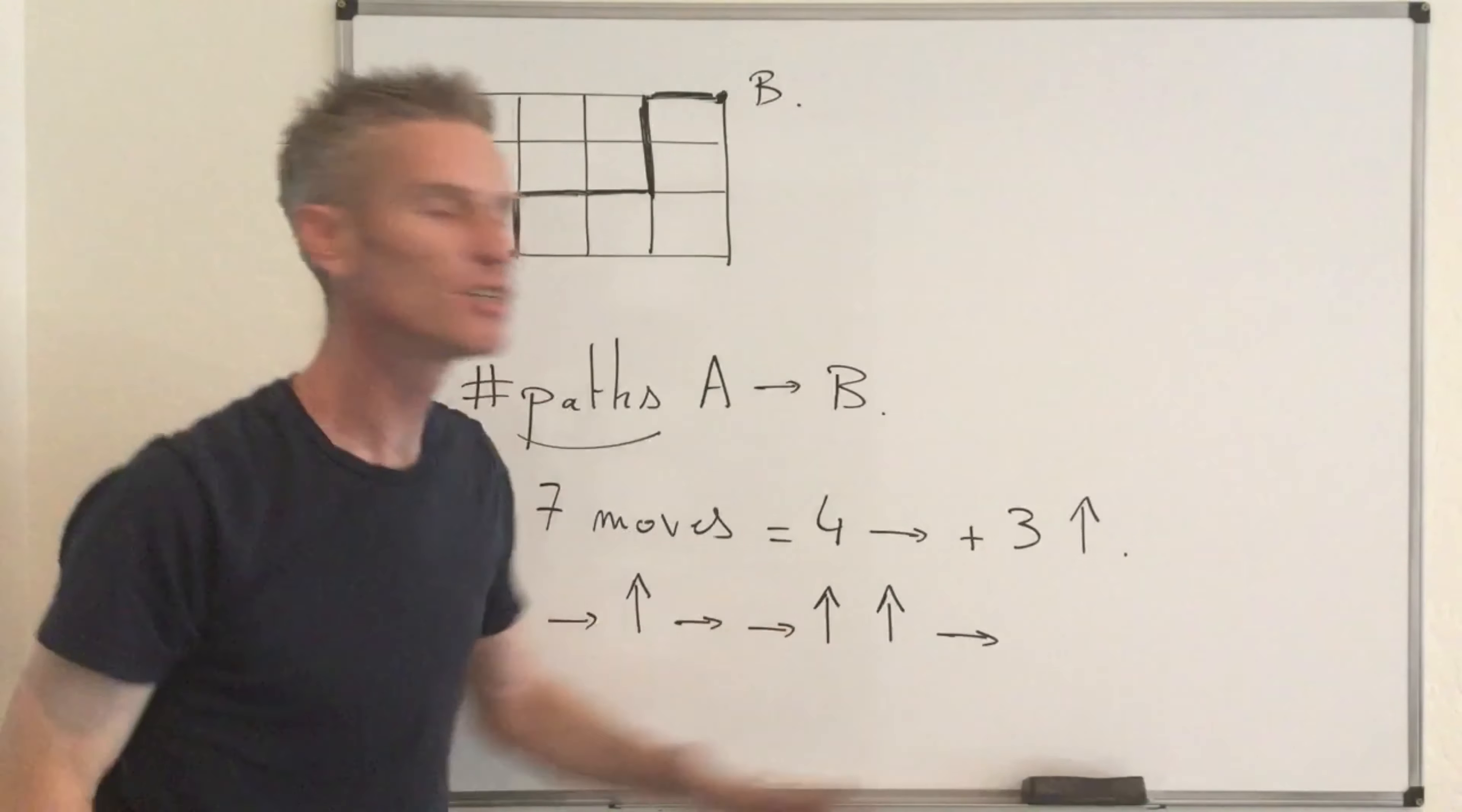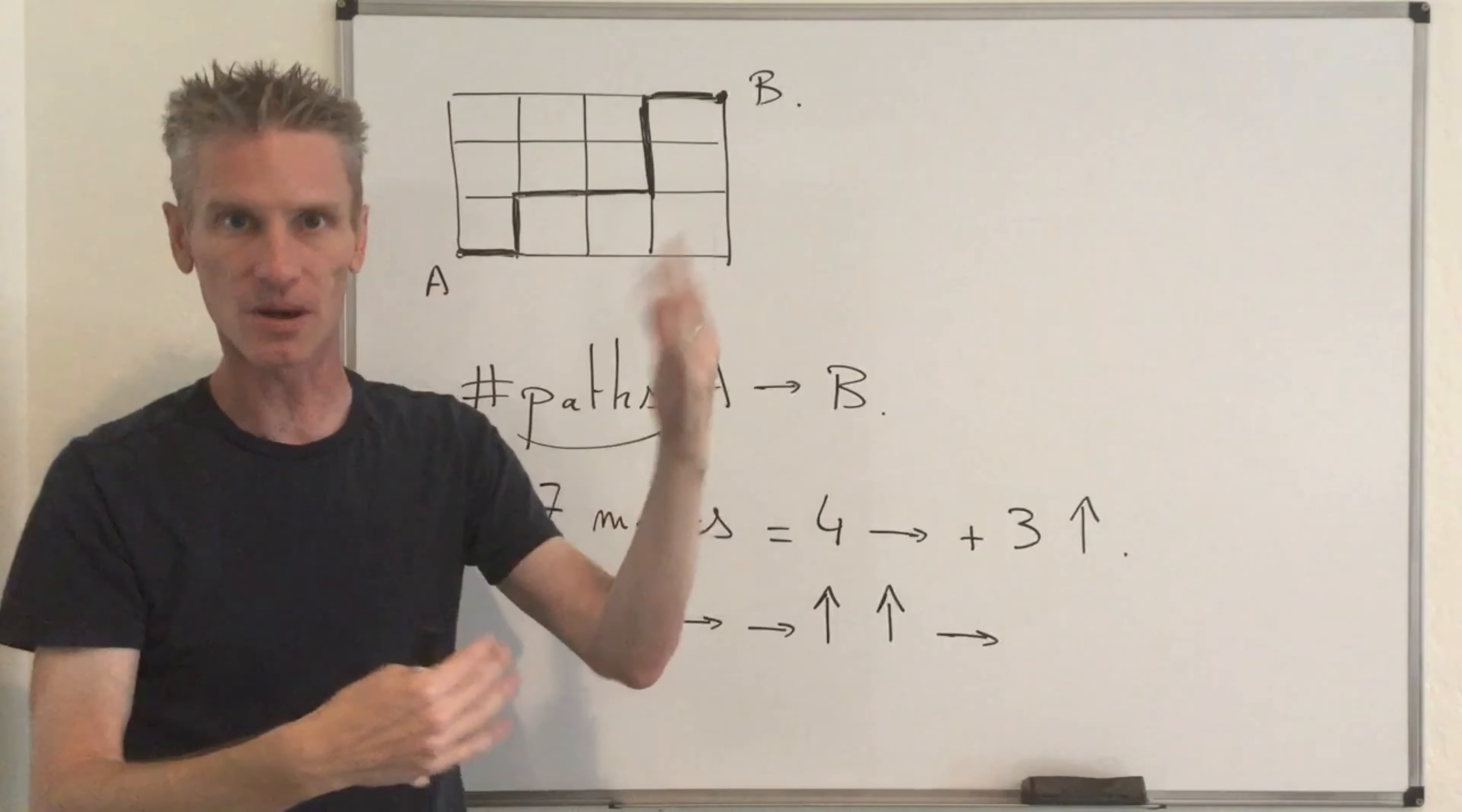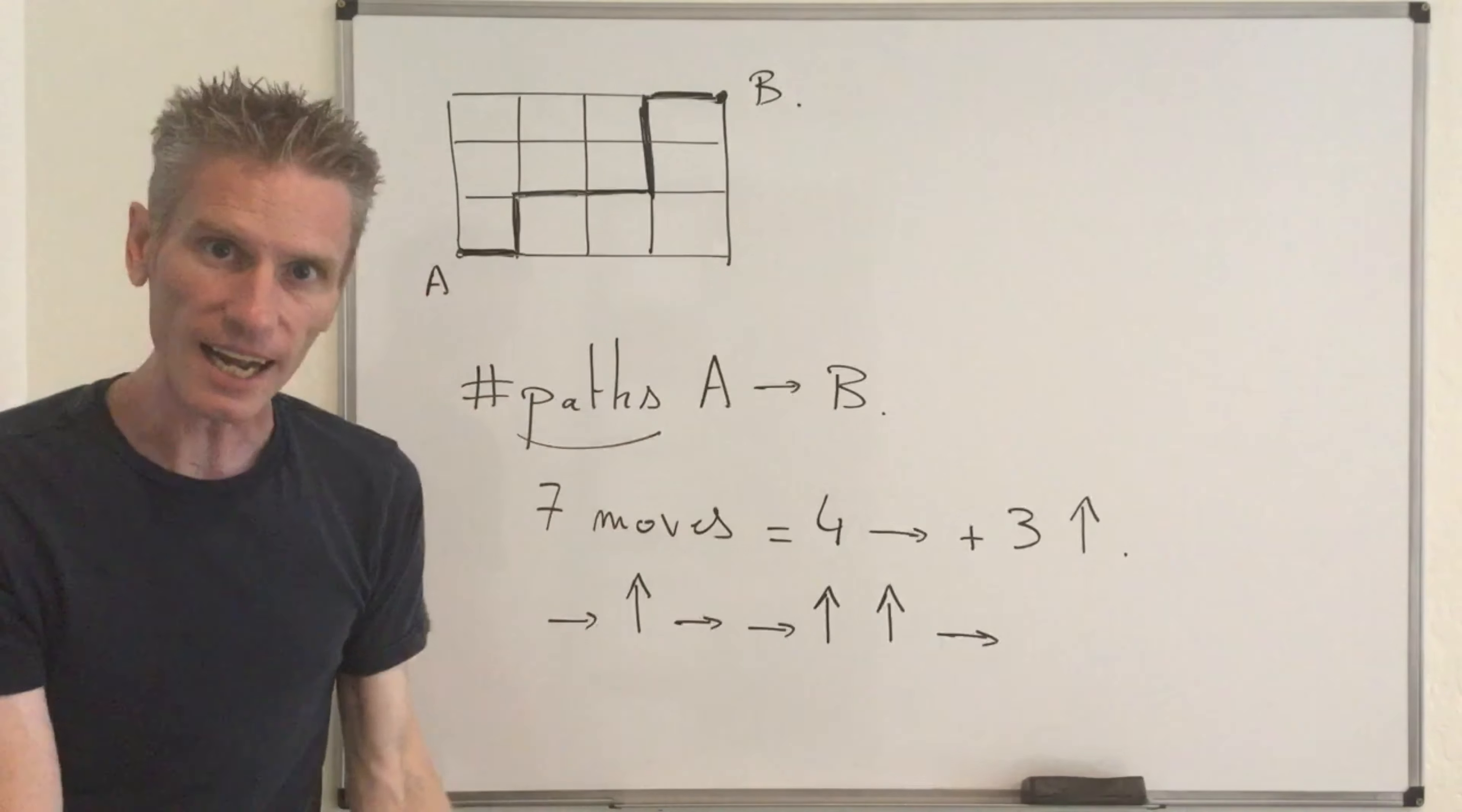So you see, if I fix my sequence of arrows that gives me one specific path. At the opposite, if I fix one specific path that's going to give me following those arrows, you see, if you go east or north or right or up. And so indeed, there is a one to one correspondence between the set of paths and the set of possible orderings of those seven symbols.